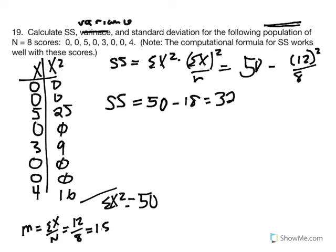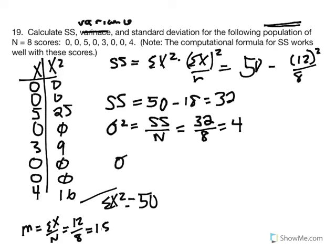Next I need to calculate the variance. Variance of a population is equal to SS over n — not n minus 1, but n. So 32 over 8 is equal to 4. The reason we don't divide by n minus 1 is because these are population parameters illustrating exactly what the variability looks like. There's no need to implement a mathematical correction to inflate that value. Standard deviation equals the square root of the variance, which is the square root of 4, giving us 2.